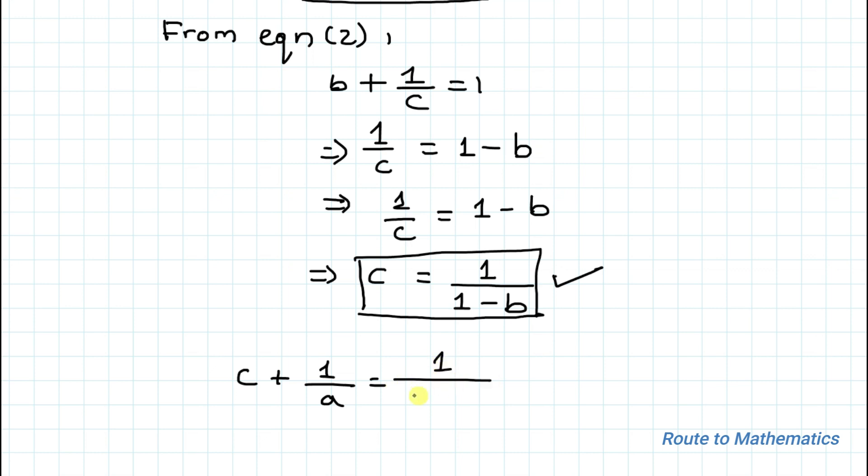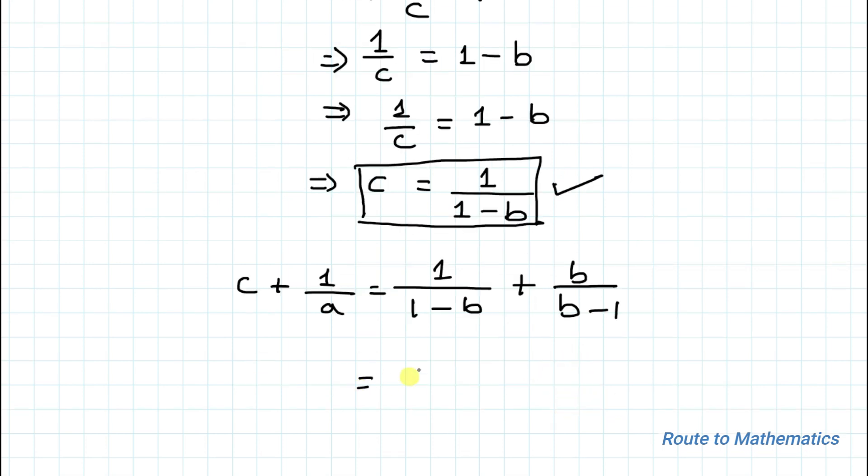Here we have 1/(1 - b) + b/(b - 1). If I take minus 1 common from the denominator, this will become 1/(1 - b) + b/(1 - b). Both the denominators are the same.